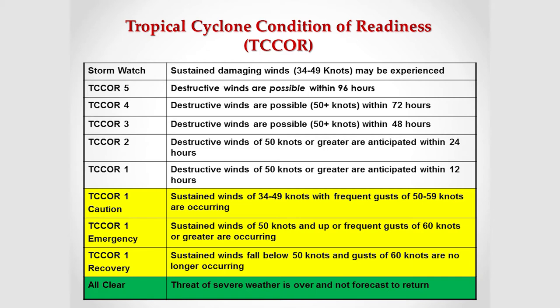T-Core 5 starts with a forecast expecting destructive winds as a possibility within 96 hours, and we'll begin preparations at T-Core 5. T-Core 4 is the same — destructive winds of 50 knots or greater within 72 hours.